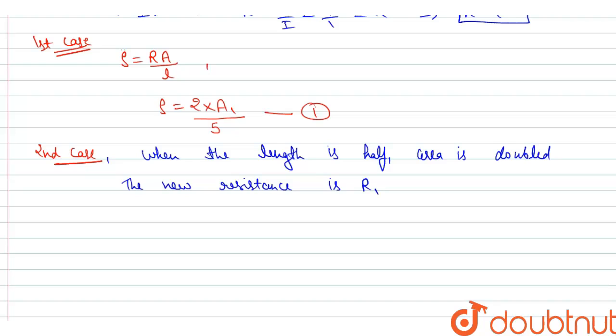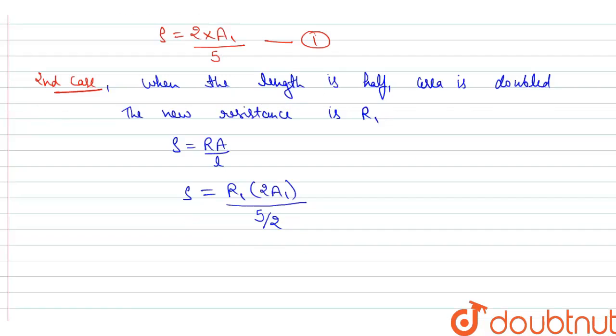According to relation, ρ equals RA over L. ρ equals R1 times 2A1 over (5/2). This is equation number 2.